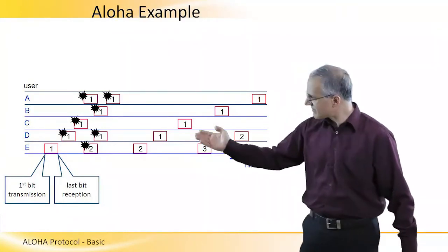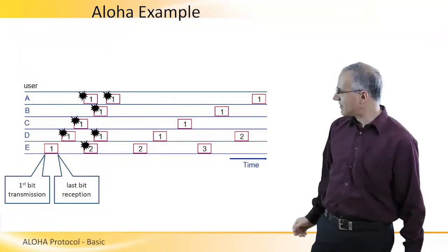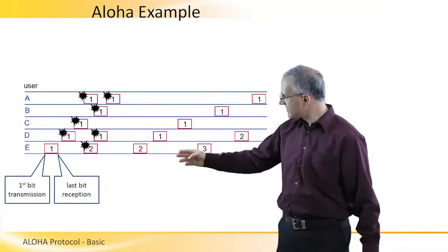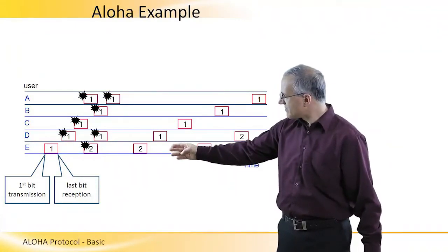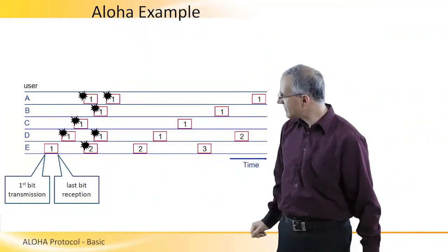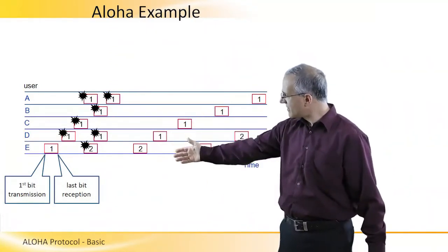What you can see here is five users using the same channel. User E is transmitting successfully its first frame. And then users D and C transmit with an overlapping period, so both their frames are collided. And we have multiple collisions here.